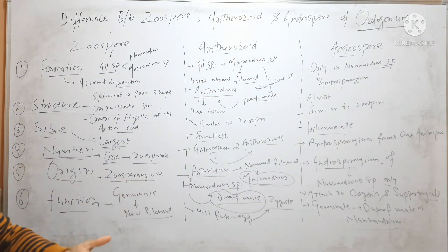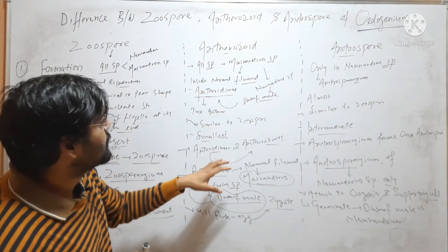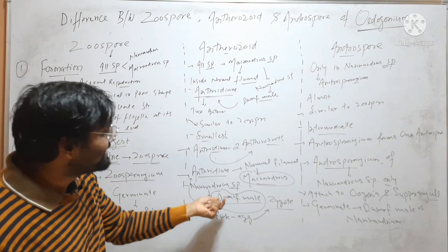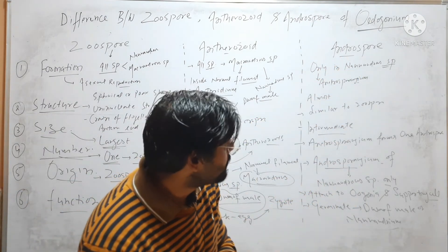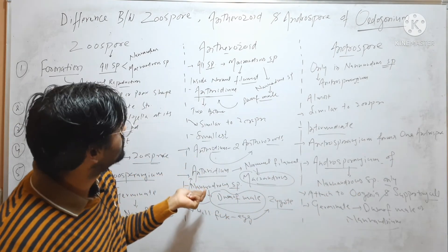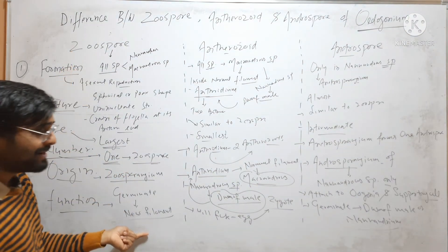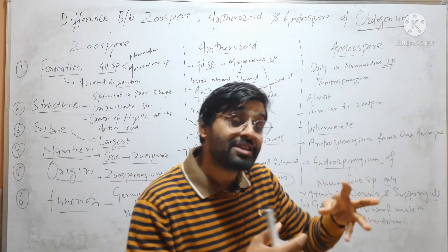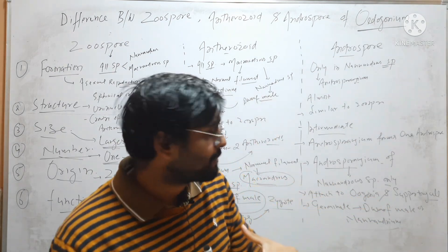Regarding origin: Zoospores are formed inside Zoosporangium. Antherozoids are formed inside Antheridium — in Macroandrous species they are formed on the normal filament, but in Nanoandrous species they are formed inside the dwarf male. Androspore is formed only in Nanoandrous species inside Androsporangium. For function: Zoospore will directly germinate and form a new filament. Antherozoid will fuse with the egg and form a Zygote. Androspore first attaches to the Oogonium or supporting cell (suffultory cell), then germinates and forms a dwarf male or Nanoandrum.